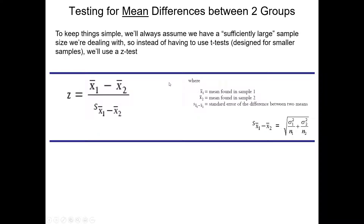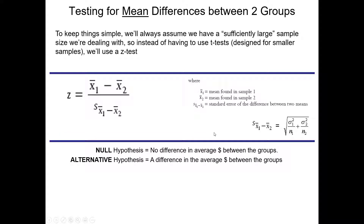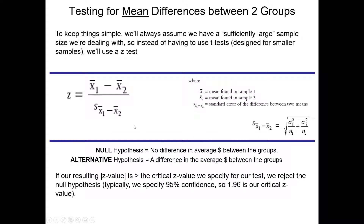Our formula is the following: the z critical value is equal to the average price willing to spend of one group minus that of another, divided by the standard error of the difference between the two means, to account for the fact that this is coming from a sample with some error or uncertainty relative to projecting to the whole population. Our alternative hypothesis is a difference in average dollars between the two groups. If the resulting absolute z value is greater than the critical z value we specify, we reject the null hypothesis. In marketing research we generally set our confidence level at 95%, so our critical z value is 1.96, and we observe whether our absolute value exceeds that threshold.